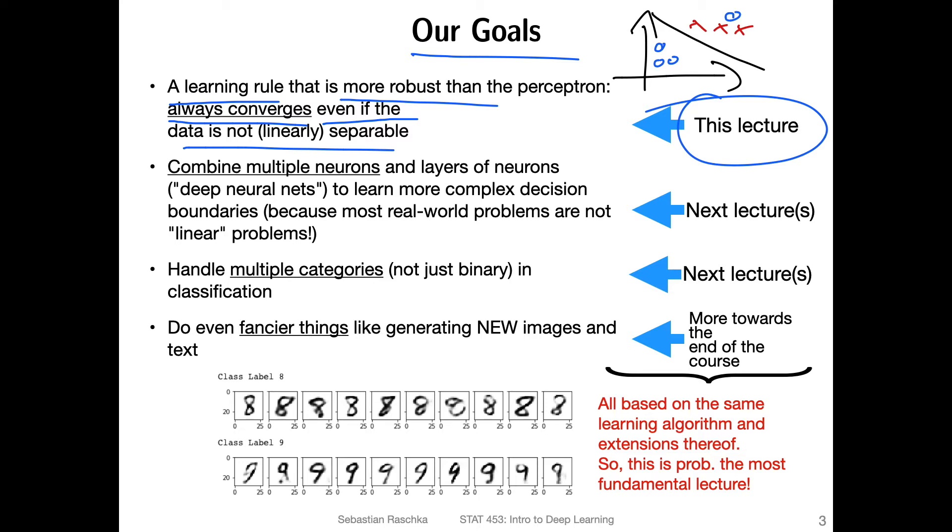But even if we have a learning rule that converges, this is a relatively trivial problem. And in practice, we are interested in more complicated problems. So we need to find a way to combine multiple neurons. Because these combinations of multiple neurons or deep neural networks can help us to learn more complicated decision boundaries. And then with that, we can solve complicated real world problems.